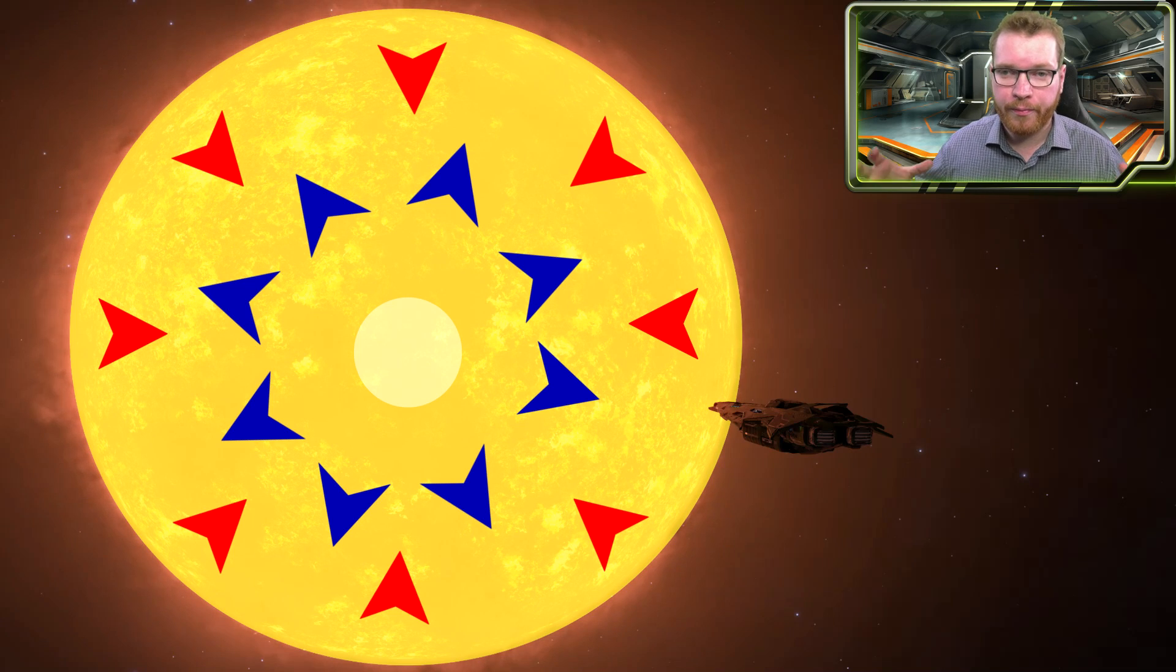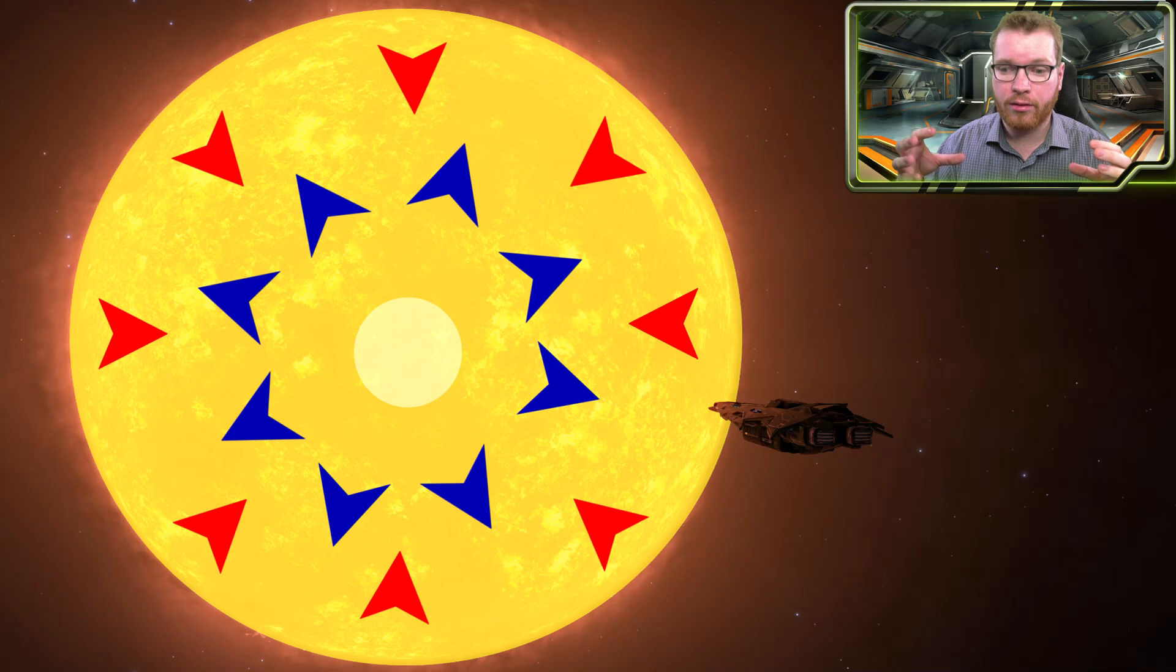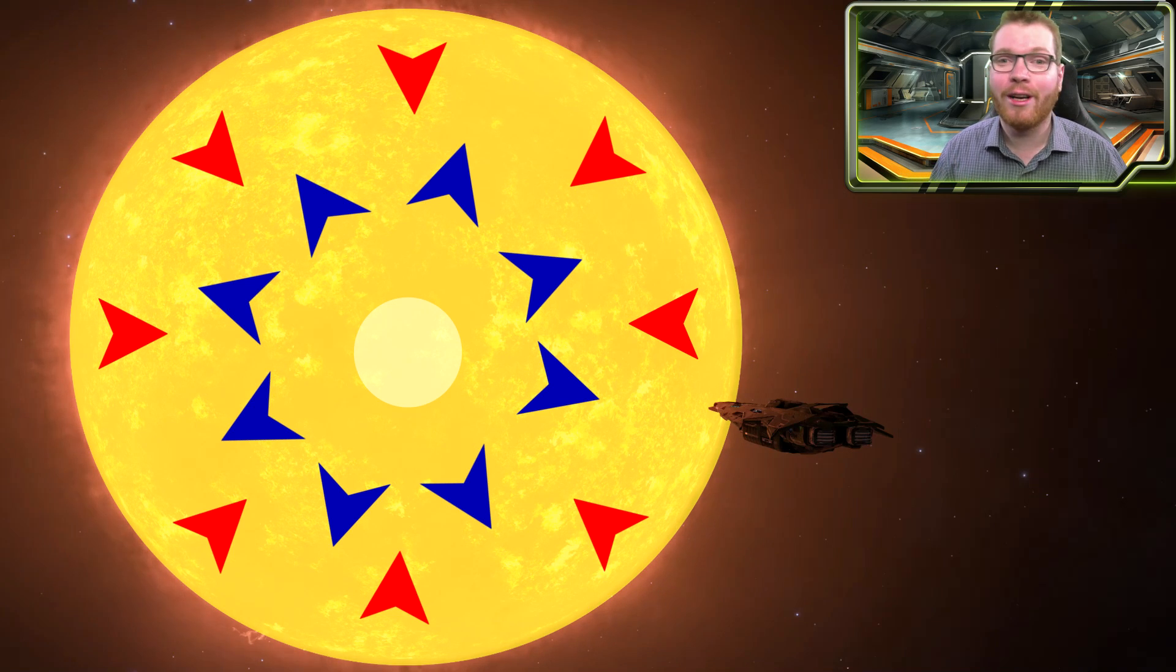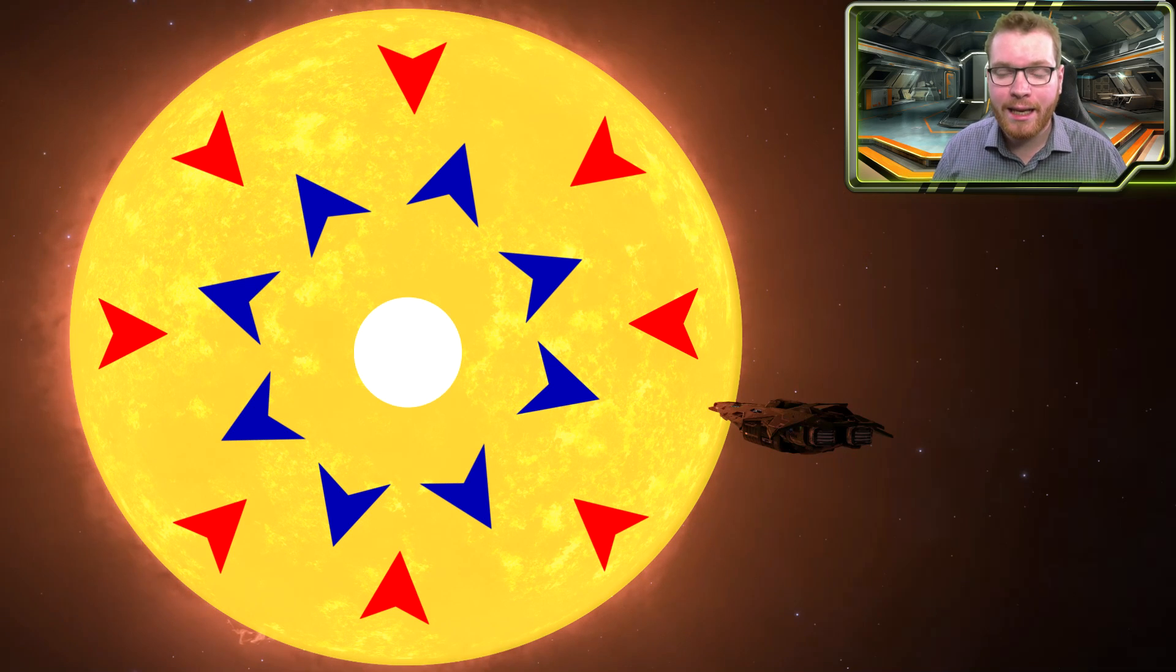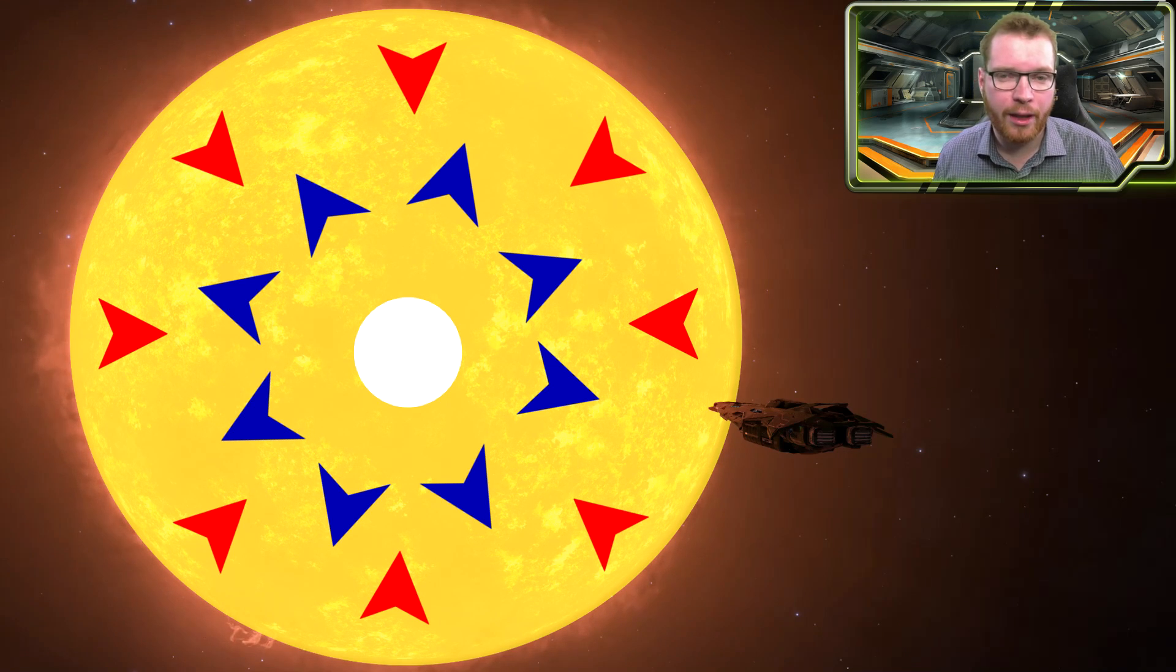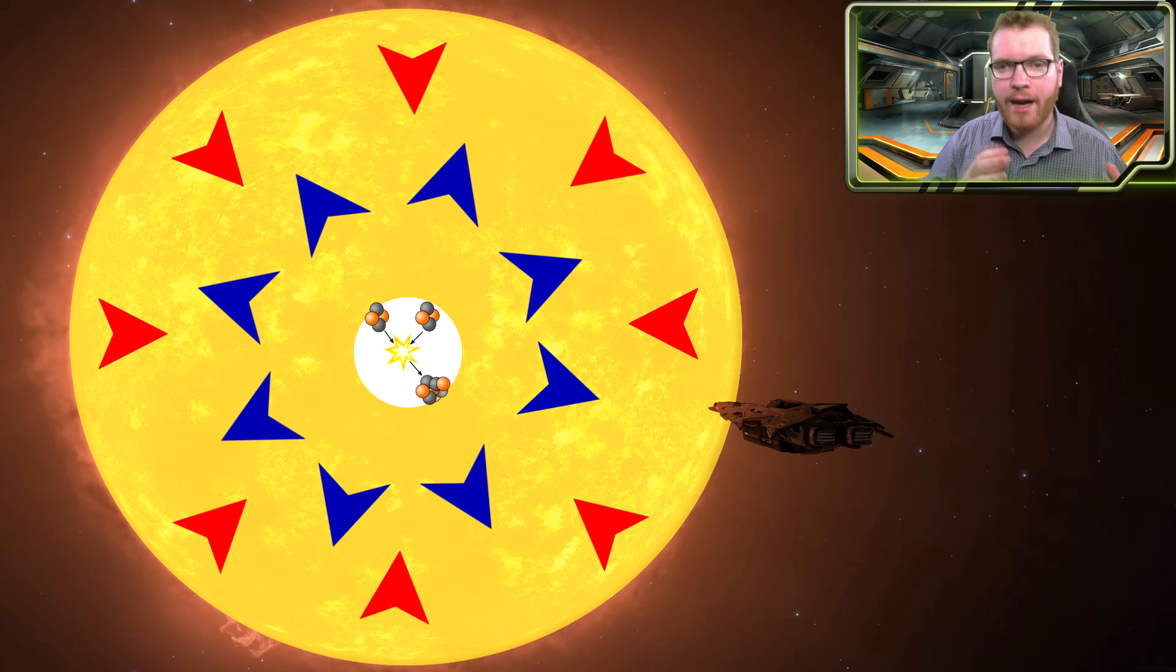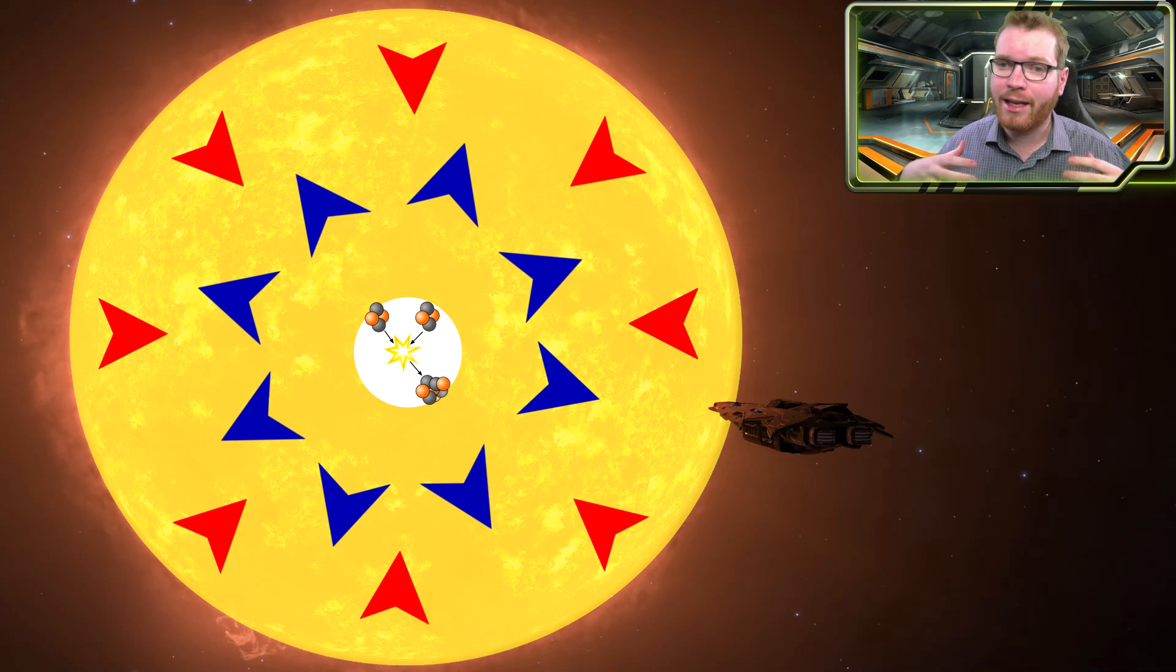The same thing happens here with the core. The core of the star begins to collapse, pressured in, now that the radiation pressure is gone. The hydrostatic equilibrium is no longer an equilibrium, so it will collapse. As it collapses, the heat increases. As the heat increases, we suddenly get to a point, at least for a certain type of star, where we can begin to go from a hydrogen burning process to a helium burning process. All that hydrogen has been converted into helium, and we now have a very helium-rich core. Suddenly we get hot enough that helium can begin to burn.